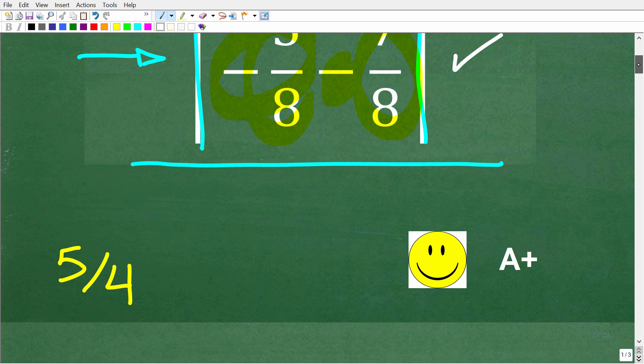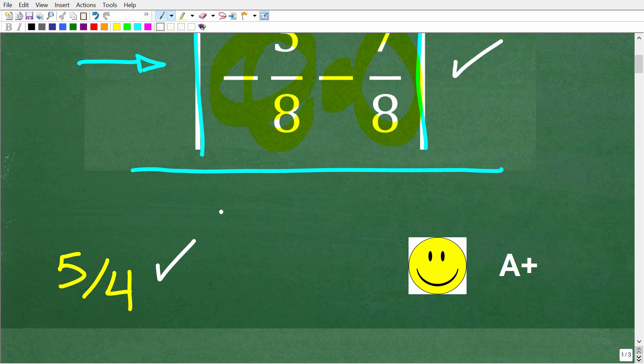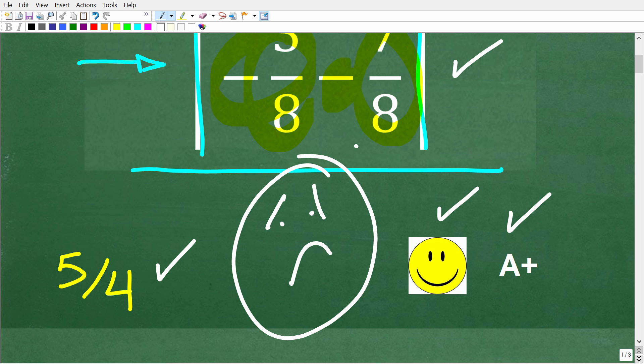Well, the correct answer is equal to 5 over 4 or 5 fourths. All right, now, if you got this right, well, you definitely get a happy face and an A plus. And if you're like, Mr. U2 Math, man, I don't even know what absolute value is.